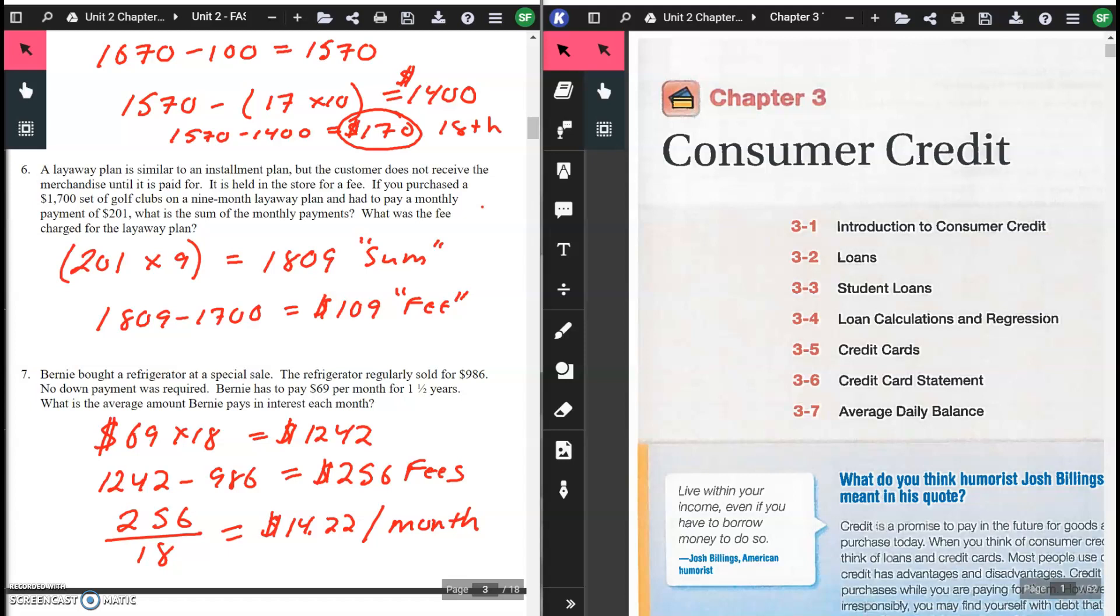What was the fee charged for the layaway plan? $1,809 minus what the clubs were actually sold for, which was $1,700, gives you $109. That $109 difference is your fee. The sum of the monthly payments was $1,809 and the fee was $109.